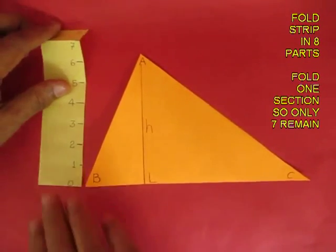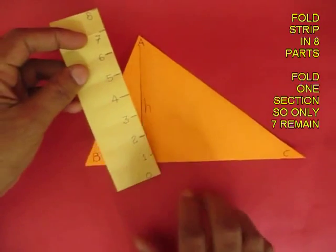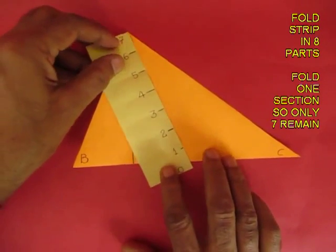Then take a strip and fold it into 8 equal parts. Fold one part so that only 7 remain.